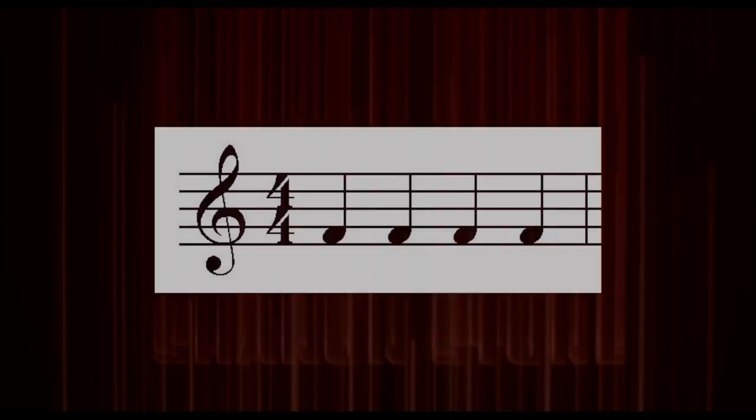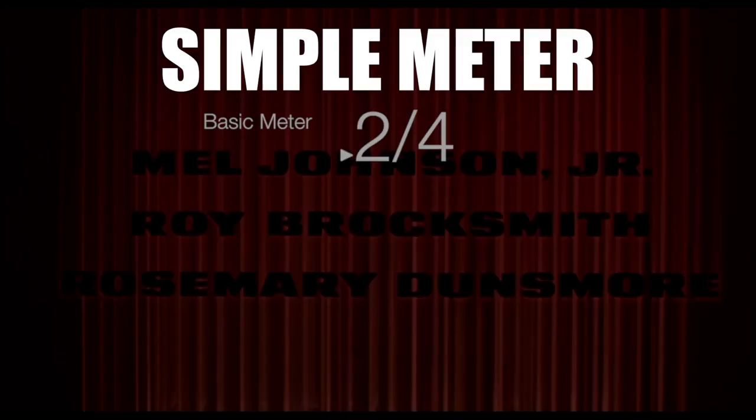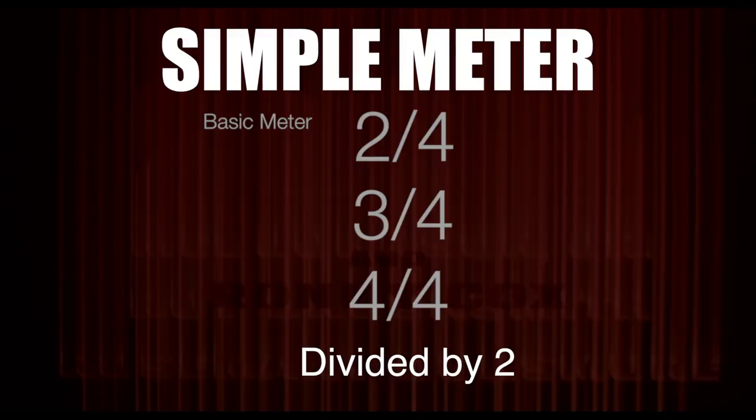So let's go back and talk about the basics of music. Music is broken down to bars that consist of pulses or beats. In the simplest terms, we have 2/4, 3/4, and 4/4, which are divided by 2 — and that is the simple meters.